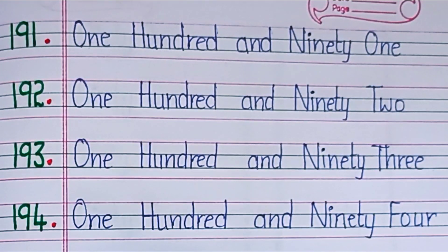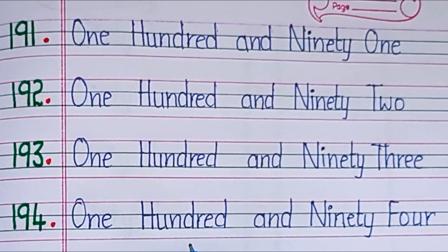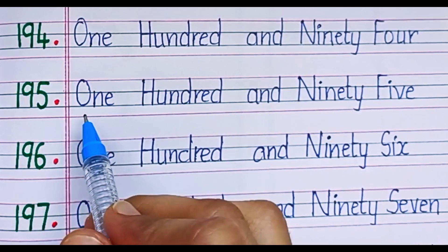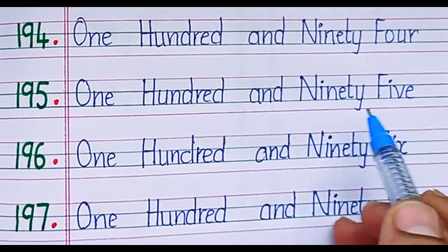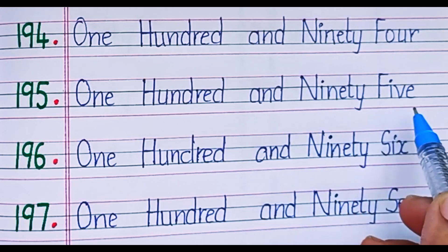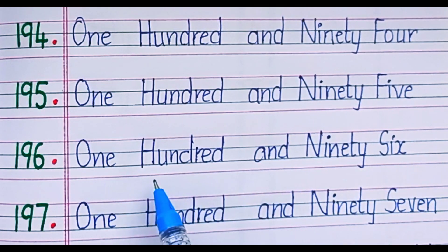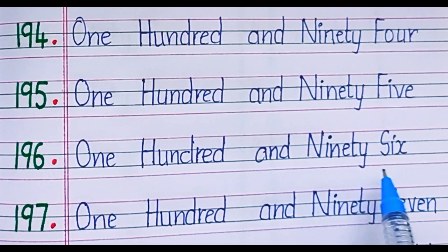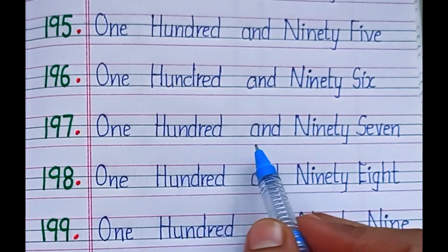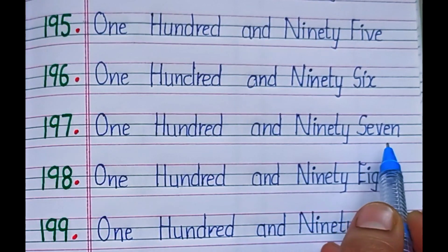194. N-I-N-E-T-Y, ninety, F-O-U-R, four. 194: Ninety-Four. 195. N-I-N-E-T-Y, ninety, F-I-V-E, five. 195: Ninety-Five. 196. N-I-N-E-T-Y, ninety, S-I-X, six. 196: Ninety-Six. 197. N-I-N-E-T-Y, ninety, S-E-V-E-N, seven. 197: Ninety-Seven.